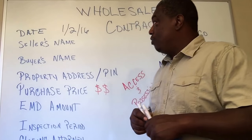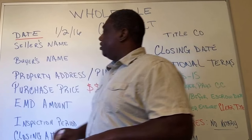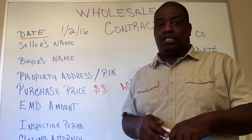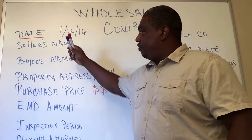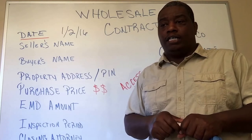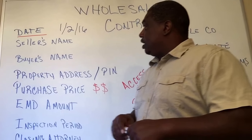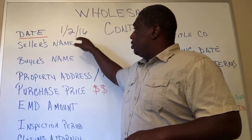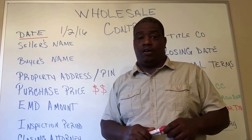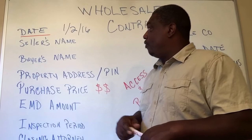First, you want to make sure you have the date on the contract. You can have the date listed at the signature line, but it's good for the attorney or the closing agent to see when that contract was agreed upon. For this video, let's use January 2nd, 2016 — this date will be referenced later so you'll see how it comes into play.